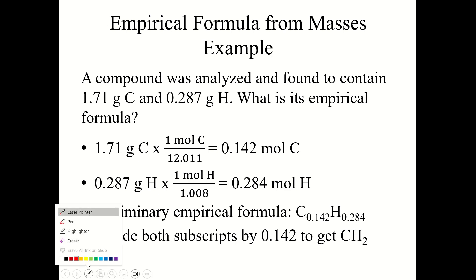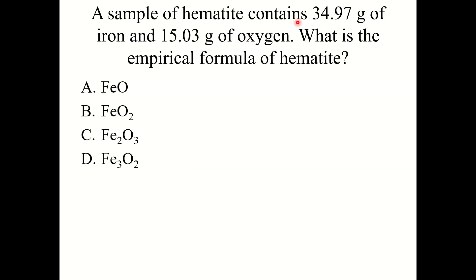Knowledge check: A sample of hematite contains 34.97 grams of iron and 15.03 grams of oxygen. What is the empirical formula of hematite? The correct answer is Fe2O3. After the division step you would get Fe1O1.5, so you multiply both by 2 to reach a whole number ratio, giving Fe2O3.